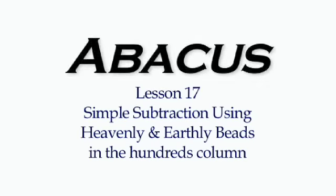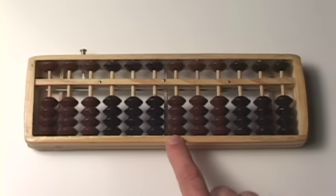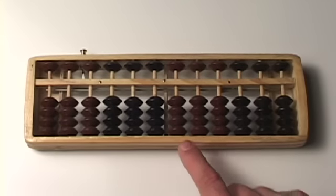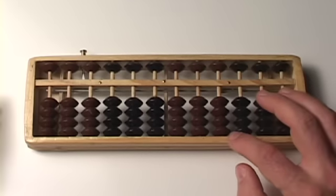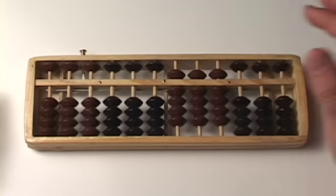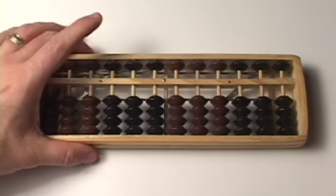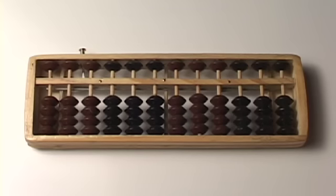The next lesson is simple subtraction involving the heavenly and earthly beads. This time we're going to be doing the hundreds column. We will be using all of the beads in the ones, tens, and hundreds columns, doing numbers from 0 all the way up to 999. So let's start.